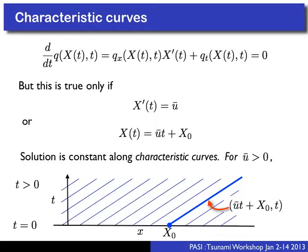So when I say x-t plane, x is horizontal and t is vertical. The solution propagates along constant straight lines — they're straight lines because the slope x'(t) = u-bar is constant. This is another way to get the solution: trace back along characteristics. The solution q(x,t) is found by determining x_0 = x - u-bar*t from which it propagated, so q(x,t) = q(x_0, 0).